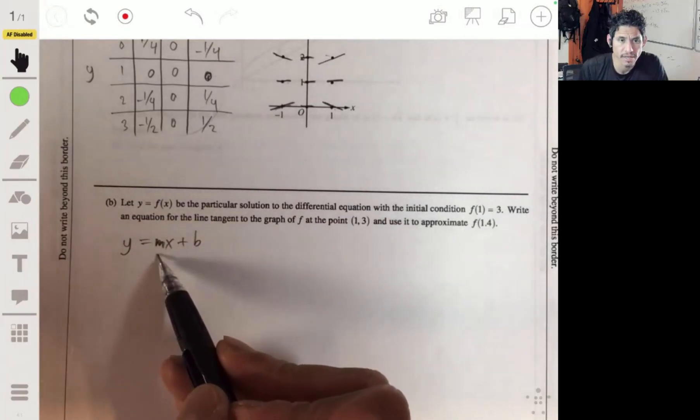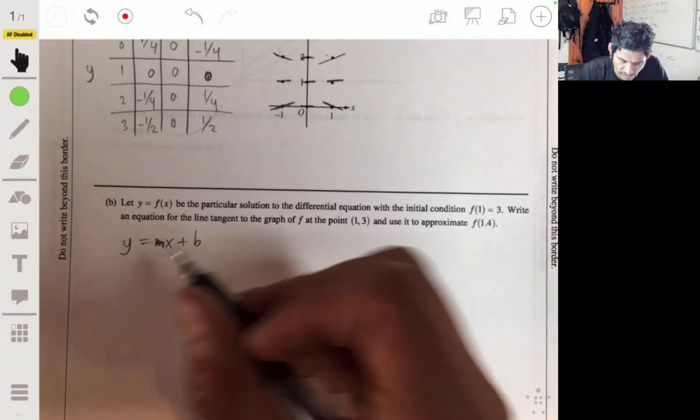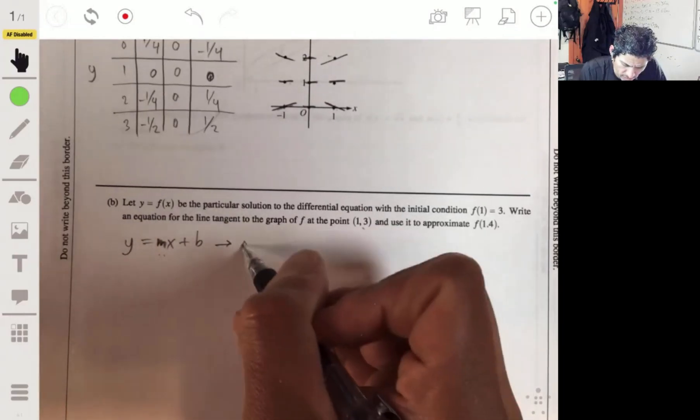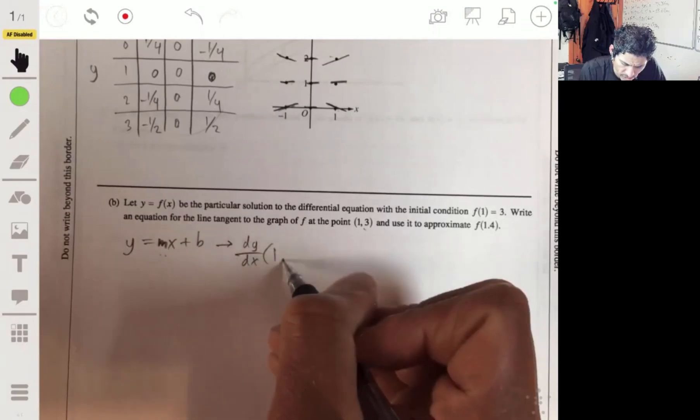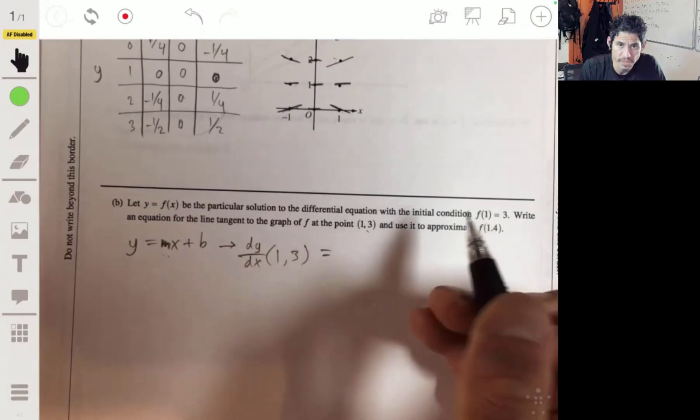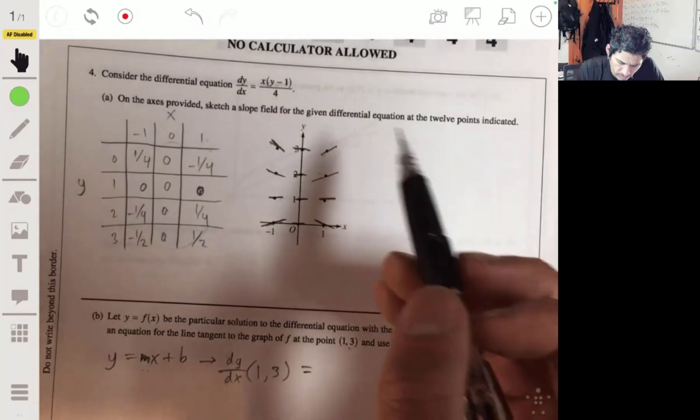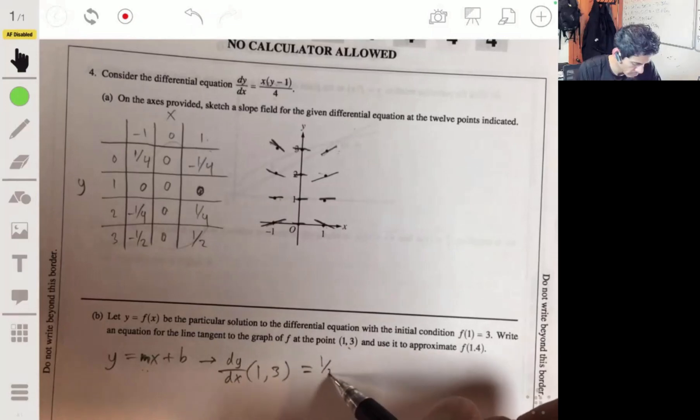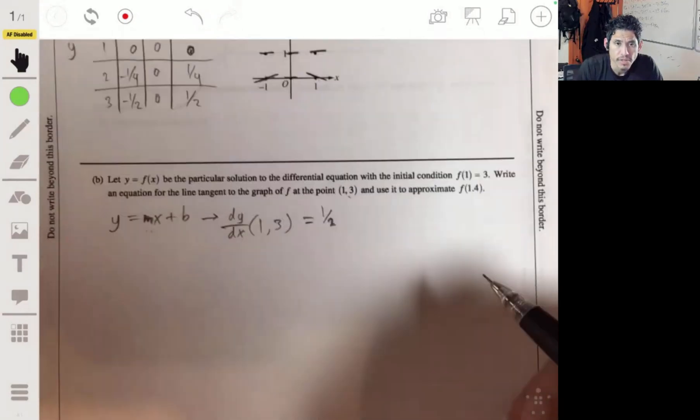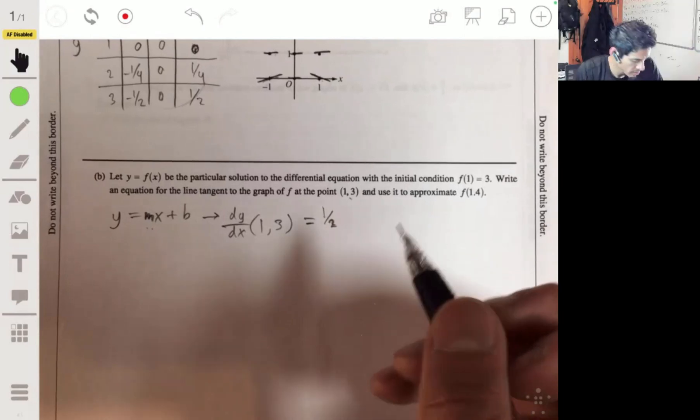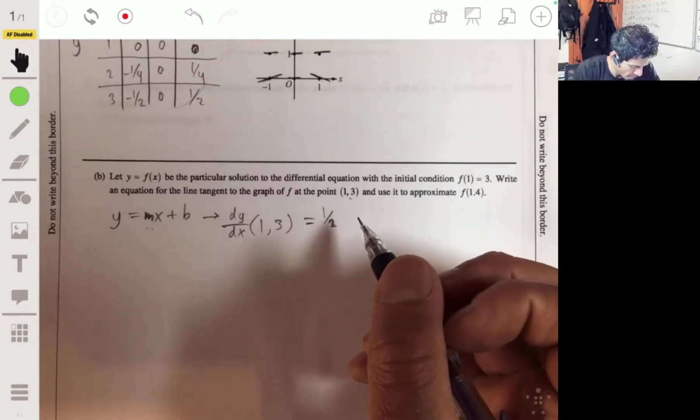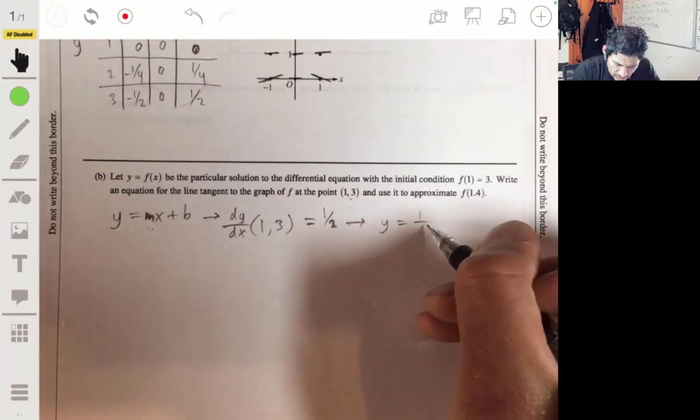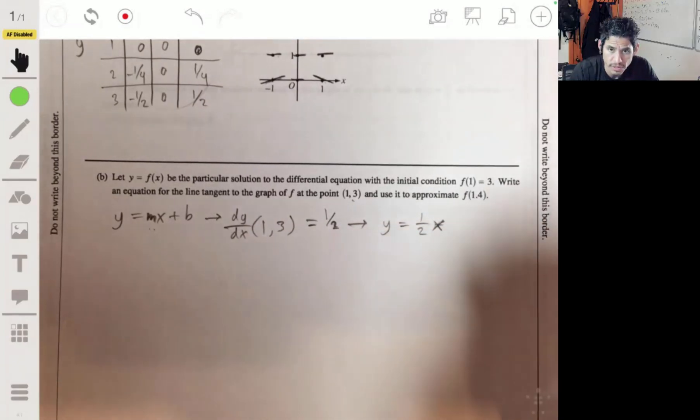So at this point we're going to have a linear equation y equals mx plus b. Let's start from there. The m at a point is the derivative at the point (1,3). We're essentially looking for the derivative at (1,3), and that would just be, we have it here, one half. So then our equation will be y equals one half x plus b.